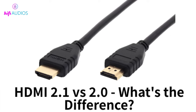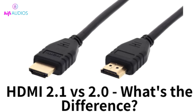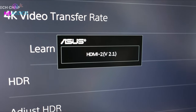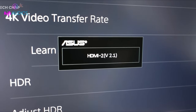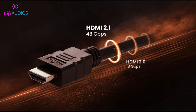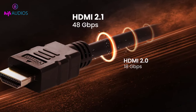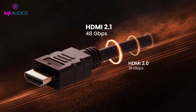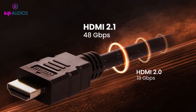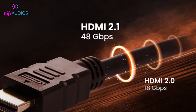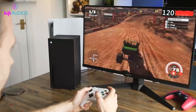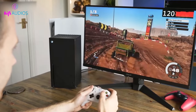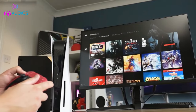Now let's talk about the main differences between HDMI 2.0 and 2.1. The main difference between the two is their maximum data transfer rate, or bandwidth. HDMI 2.0 has a maximum bandwidth of 18 Gbps, while HDMI 2.1 has a maximum bandwidth of 48 Gbps. This higher bandwidth allows HDMI 2.1 to support higher resolutions, frame rates, and refresh rates.